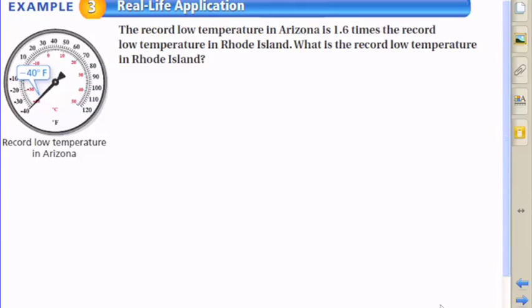We're going to use equations to solve a real-life problem. The record low temperature in Arizona is 1.6 times the record low temperature in Rhode Island. What is the record low temperature in Rhode Island?